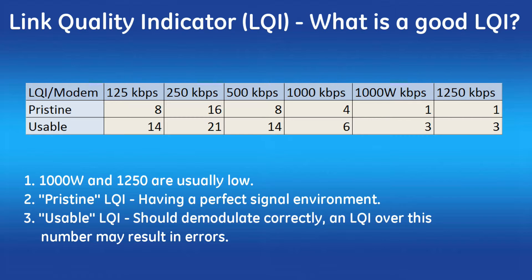Another note on modems and distance: the lower the kbps, the further the units may be separated. A 125 kbps modem can reach out the farthest, while the 1250 kbps modem has the shortest range. The Orbit will support up to 7 hops in a store-and-forward configuration to extend these distances, although latency must be considered with each additional hop.